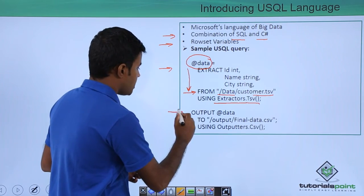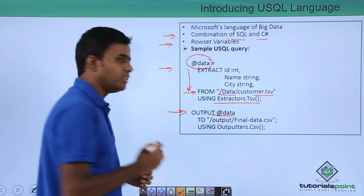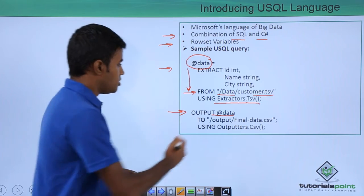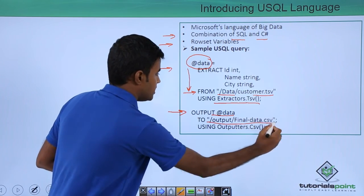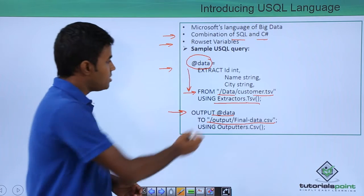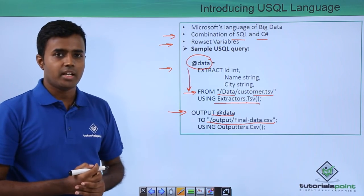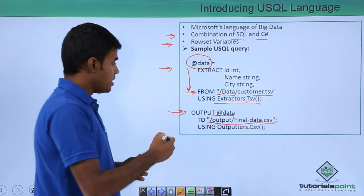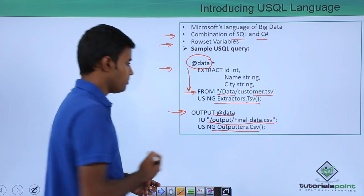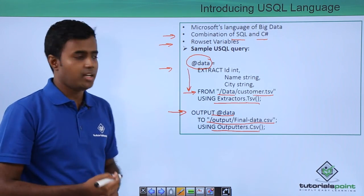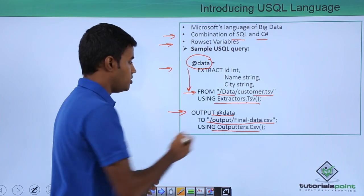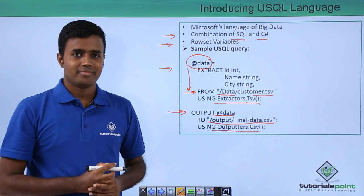In the second step, we are outputting whatever is stored within the @data variable to a CSV file at a particular location within your data lake store. We are making use of a class called Outputters. Since you are writing to a CSV file, you use Outputters.Csv. Thank you.